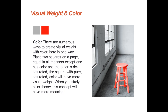Visual weight and color: some of you will take color theory and some won't — this is where you plug in that information as far as balance goes. There are numerous ways to create visual weight with color. If you place two squares equal in all manners except one has color and the other is desaturated, the square with pure saturated color will have more visual weight. In this example, the stool stands out because it's the only object with color. Also, our eye sees warm colors — yellow, orange, red — before it sees cool colors like violet, green, and blue. There are many aspects of color theory that affect balance.